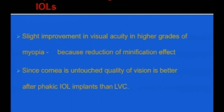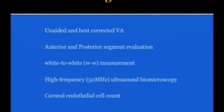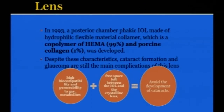Potential complications include raised intraocular pressure — though newer lens designs have greatly reduced this — and cataract formation, especially if vault is very low, so sizing of the ICL is extremely important. Materials include silicone (PRL), the most commonly used colamer (ICL — implantable colamer lens made with porcine collagen, most biocompatible, can treat up to minus 20 diopters), and hydrophilic acrylic used in Indian counterparts such as IPCL and lenses from Appasamy and Biotech.